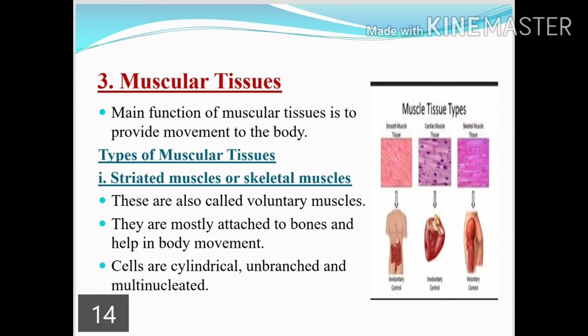The third type of animal tissue is muscular tissue. Its main function is to help in movement, because muscles are involved in movement. Muscular tissue is basically of three types. The first is striated muscles, also called skeletal muscles or voluntary muscles, because they act according to our wish. They are mostly attached to bones and help in body movement. Their cells are cylindrical, unbranched, and multi-nucleated — meaning more than one nucleus is present.